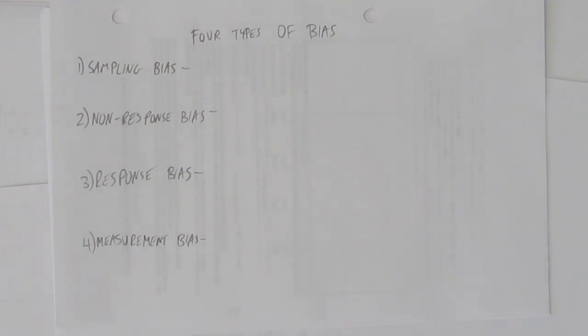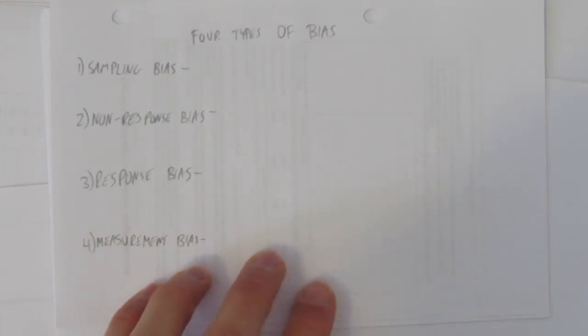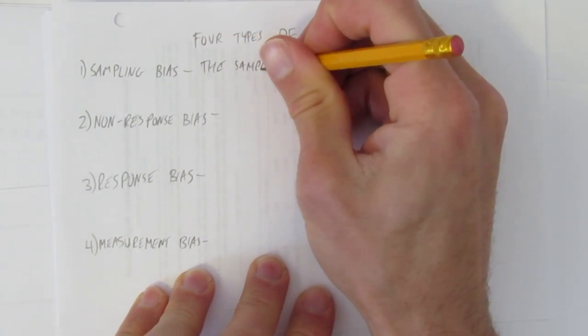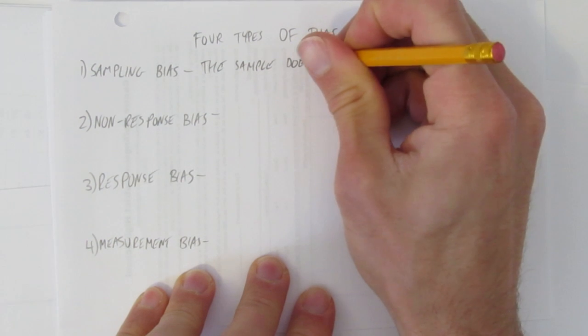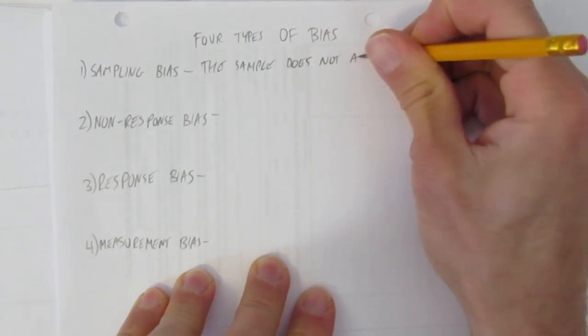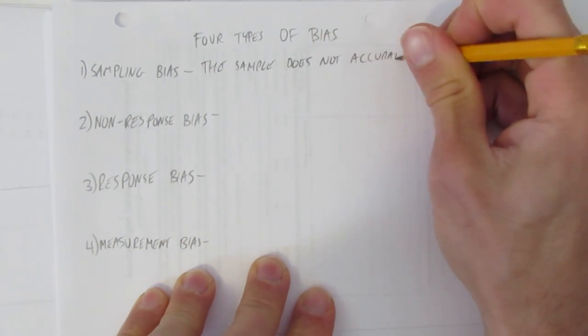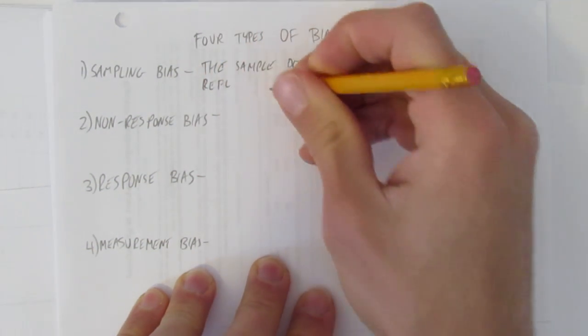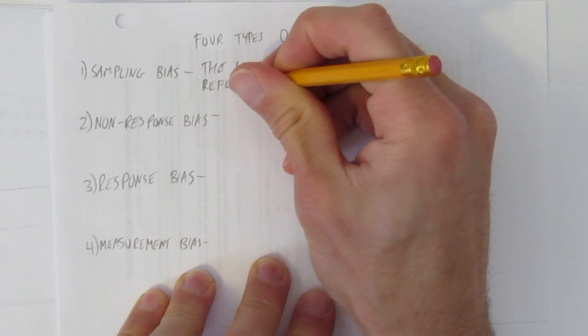The first type of bias is sampling bias. This is when the sample does not accurately reflect the population.